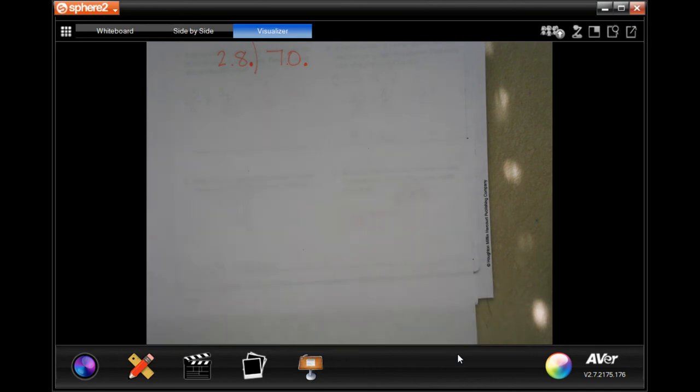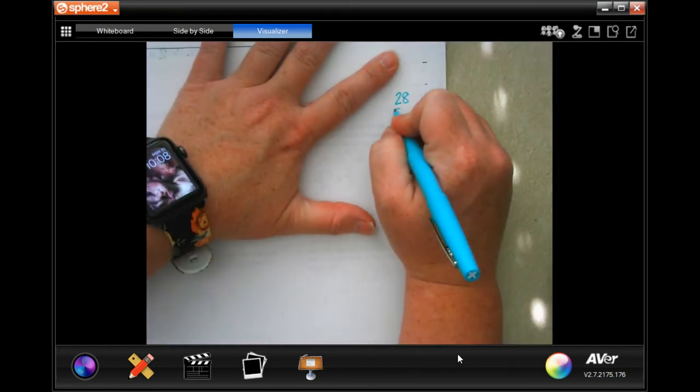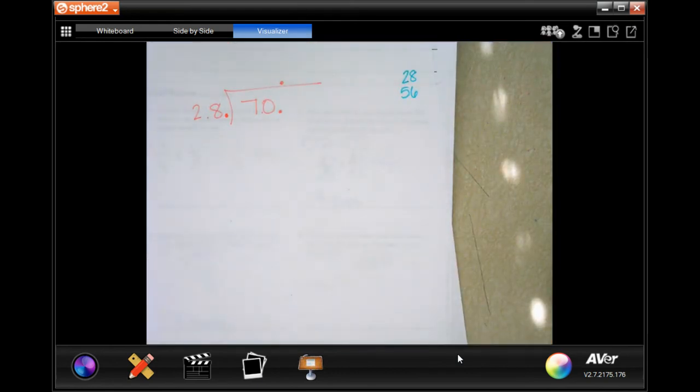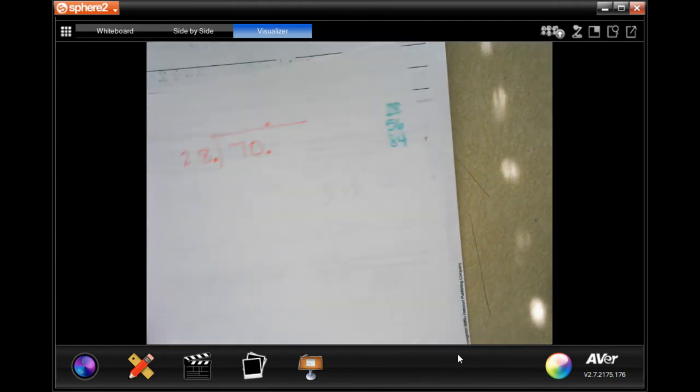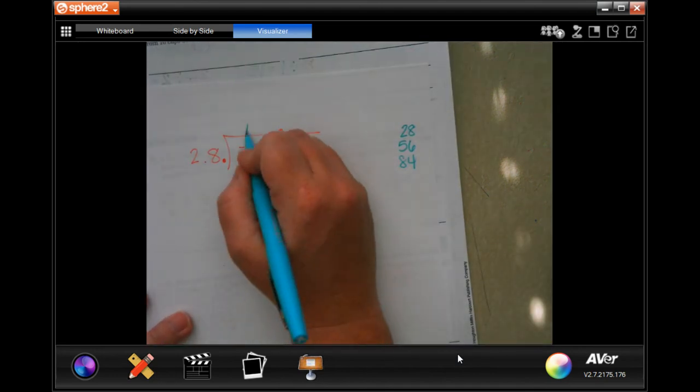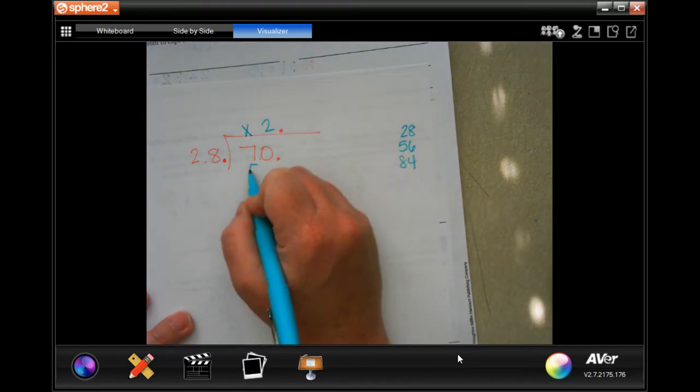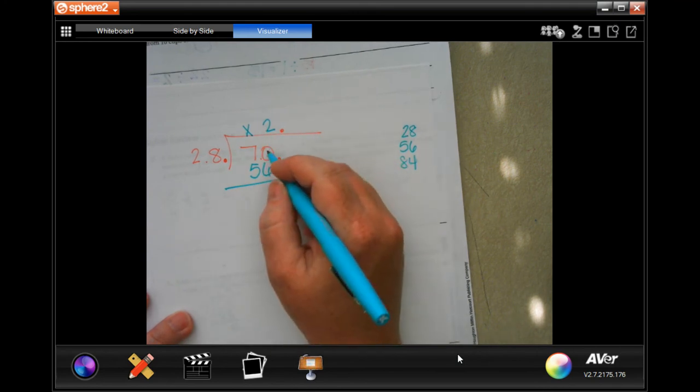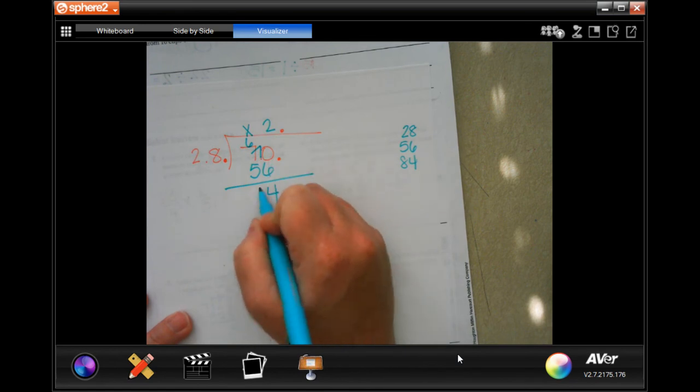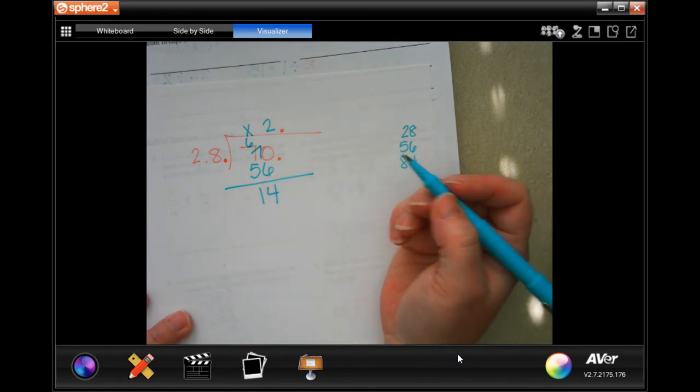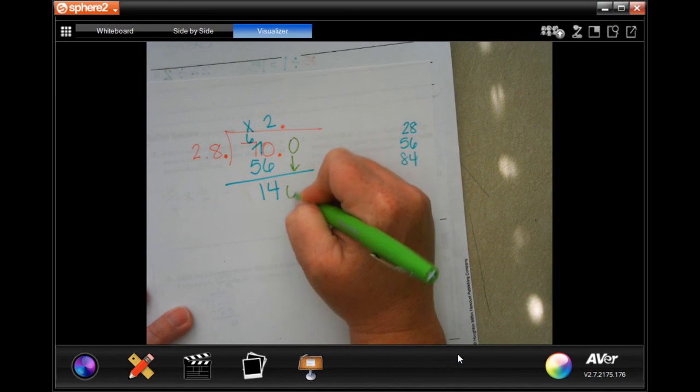So, over on the side, I'm going to write down my multiples of 28 because I do not know those off the top of my head. So, I do know 28, and I know that my next one will be 56. All right. So, let's see what we can do here. So, 28 cannot go into 7. I'm going to put a placeholder. 28 into 70. It looks like the closest I'm going to get is 56. So, that's 2 times 56. 0 cannot take away 6. I need to borrow. I wind up with 14. So, now, 14 is less than 28. I'm going to go ahead and add a 0 and bring it down.